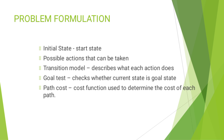Problem Formulation involves deciding what actions and states to consider when the description about the goal is provided. It is composed of: Initial State (also known as start state), Possible Actions that can be taken in the Transition Model, Goal Test, and Path Cost. The Transition Model describes what each action does. The Goal Test checks whether the current state is the goal state. Path Cost is a cost function used to determine the cost of each path.